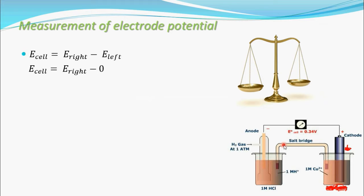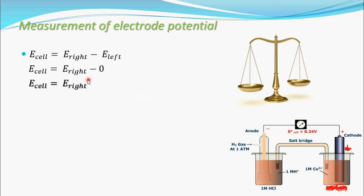The potential of the Standard Hydrogen Electrode — E_left — is zero. So E_cell = E_right − 0, which means E_cell = E_right. The value shown by the voltmeter is E_cell, and since E_left is zero, the voltmeter reading directly gives you E_right — that is, the electrode potential of the electrode you want to measure.